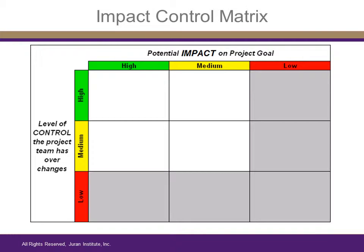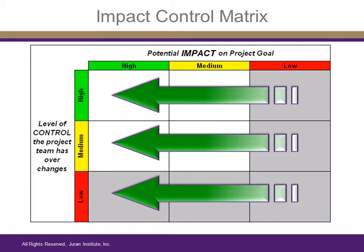The impact control matrix is comprised of two intersecting axes. The top axis is a scale of the level of impact that each individual potential cause may have on the problem being addressed by the project team. The causes that have been developed are ranked high, medium, or low relative to one another. The higher the impact of the cause, the further to the left it will appear on the matrix, as depicted by the directional arrows.